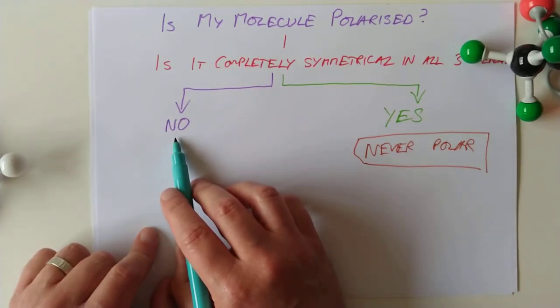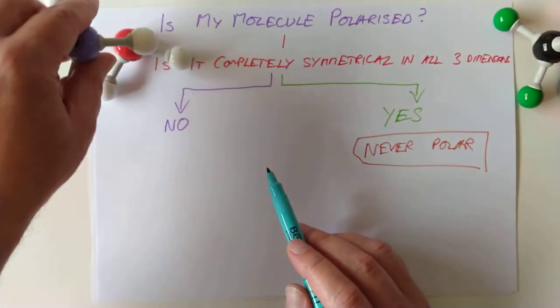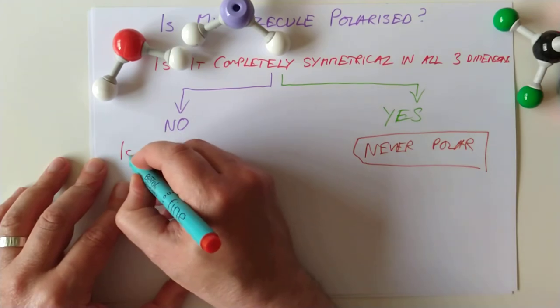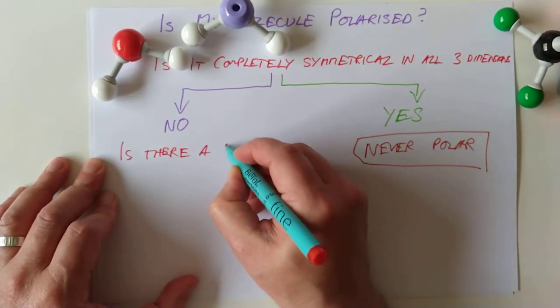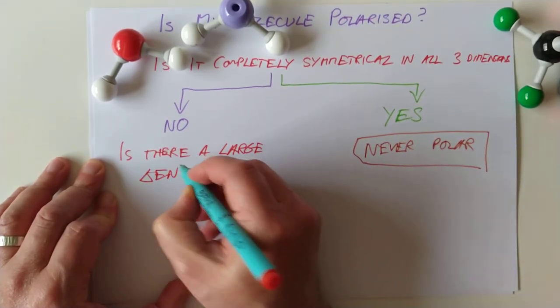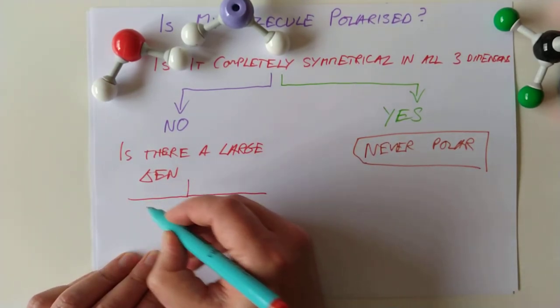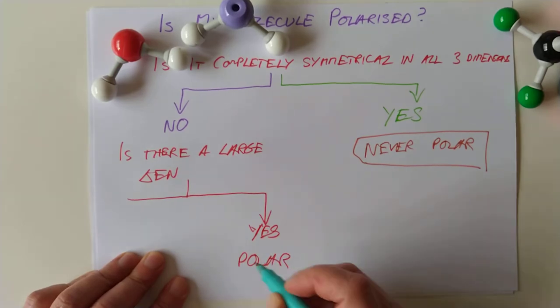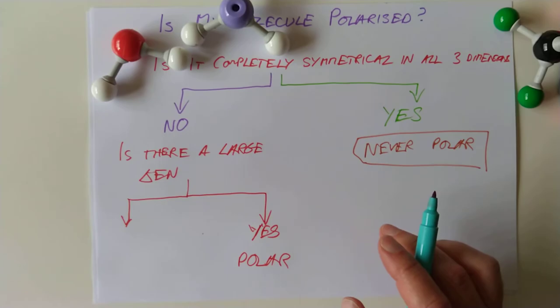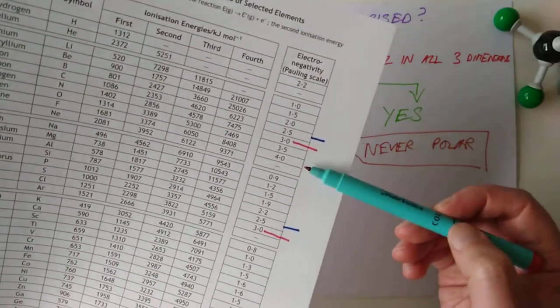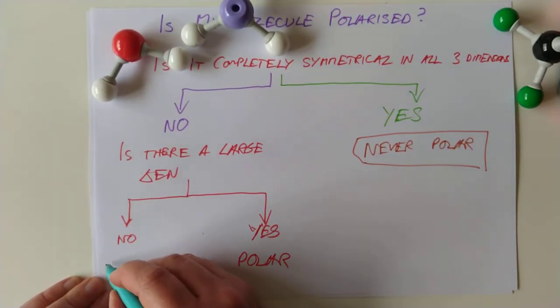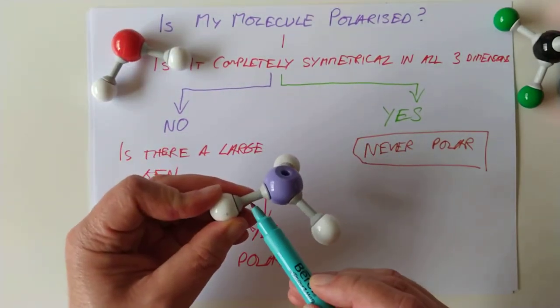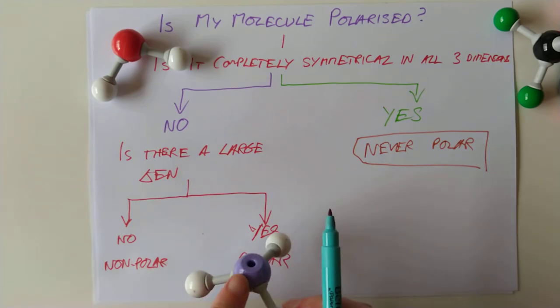And the other side of the question was, is my molecule polarized? Is it completely symmetrical in all three dimensions? No, it's not. That applies to these guys here. Then you have to ask yourself a second question. Is there a large delta EN? If the answer to that is yes, then your molecule is polar. If the answer to that is no, and it can happen, that's why we looked up the electronegativities and found that some of the elements do have identical EN numbers, so it can happen. So if there's not a large delta EN, then it is non-polar, despite not being totally symmetrical. The reason it's non-polar of course is the individual bonds are not polarized if there's not a large difference in electronegativity between the two atoms.